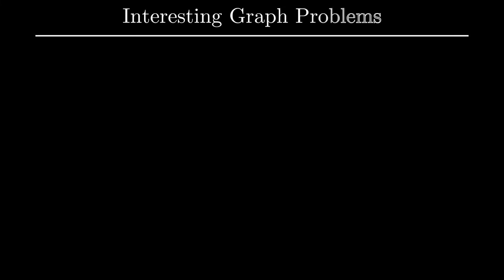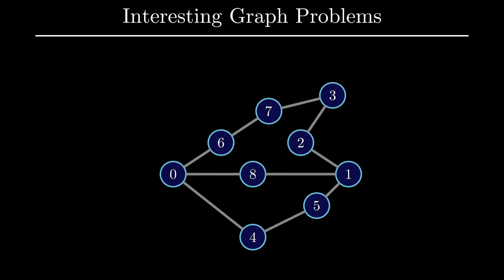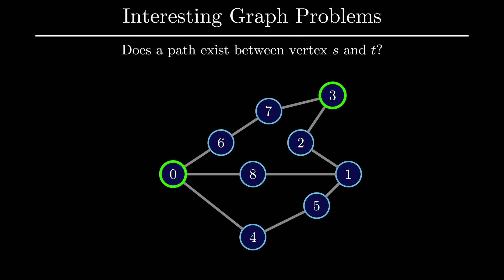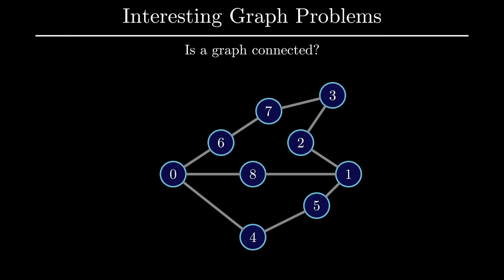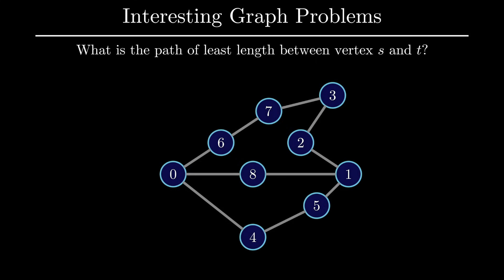The final thing I want to do in this video is to discuss some of the interesting problems and questions you may find in graph theory. A fairly standard problem revolves around connectivity between two vertices. For example, it's easy for us to see that vertices 0 and 3 have many paths between them, but what sort of algorithms can we use to allow a computer to efficiently solve this problem? We can naturally extend this problem to ask if an entire graph is connected. There are a variety of efficient algorithms to solve these problems that we will cover in the next few videos. Another interesting problem in graph theory is the shortest path problem: specifically, what is the path of the least length between two vertices. For this particular graph, here's the shortest path between vertices 0 and 3.